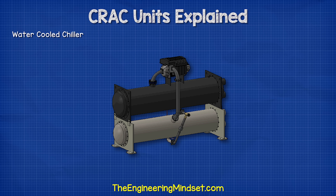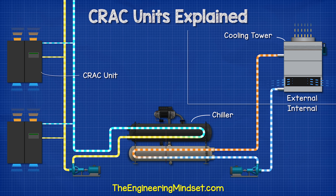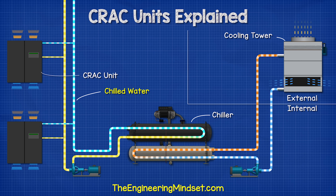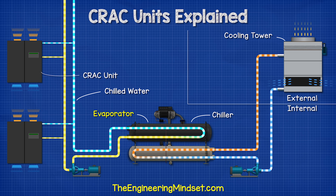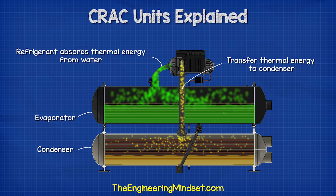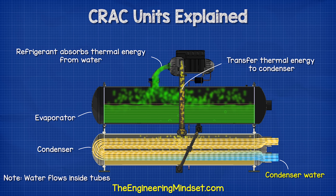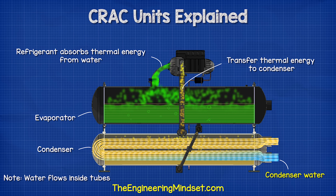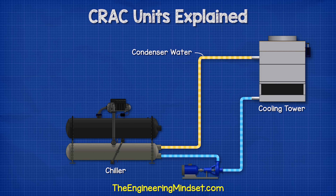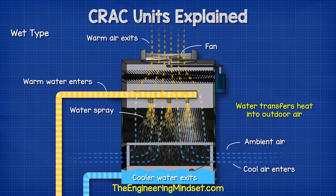With water-cooled systems, the chiller is installed internally with a cooling tower located externally. The chiller sends chilled water to the CRAC unit to collect the unwanted heat, and then returns it to the chiller's evaporator. A refrigerant inside the evaporator collects this heat and transfers it to the condenser. Another stream of water, known as condenser water, flows in the condenser, absorbs the thermal energy, and sends it to the cooling tower. There, the water is usually sprayed into a stream of ambient air, which removes the heat and cools the water down.